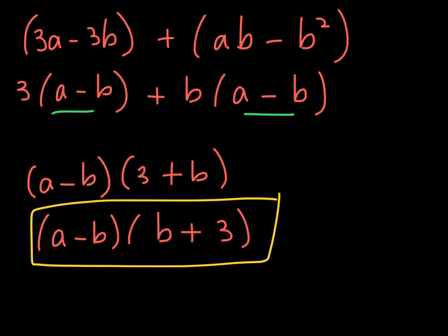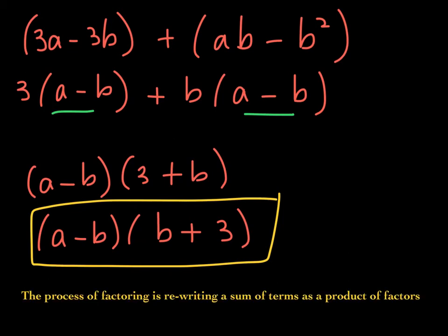If you wanted to check, distribute and you'll get the original polynomial back. Factoring is rewriting a sum of terms as a product of factors — here it's a binomial factor times a binomial factor. It's going from addition to multiplication.